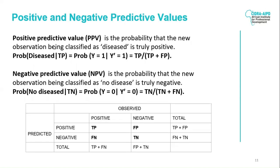The other two summary measures are positive predictive value (PPV) and negative predictive value (NPV). By definition, PPV is the probability that patients with a positive screening test truly have the disease. So if a tested patient has an abnormal screening test, what's the probability that the patient really has the disease? You can calculate PPV to answer that question.